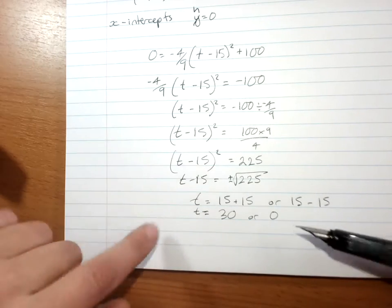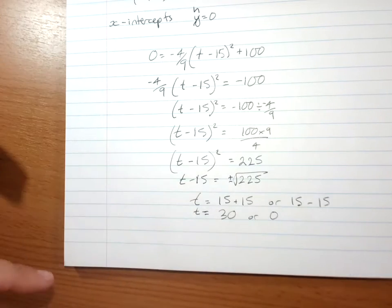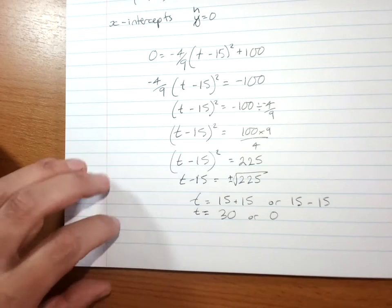So it's a reasonably easy way of going from turning point form to the x-intercepts. And you could probably skip a few lines of working.